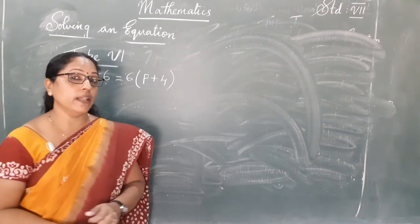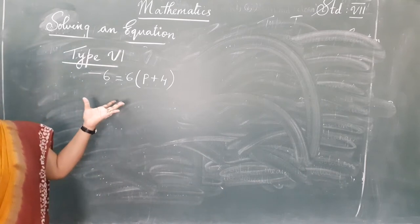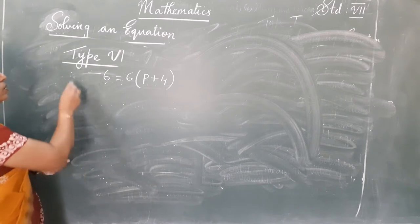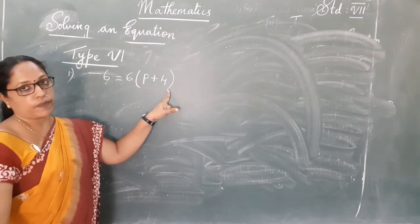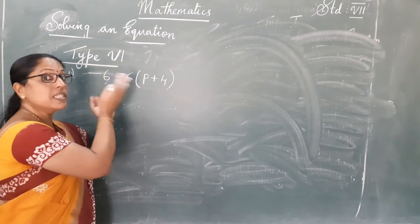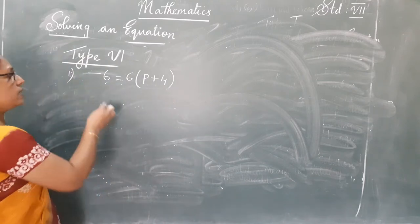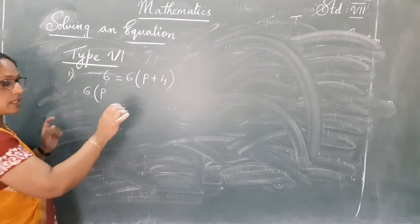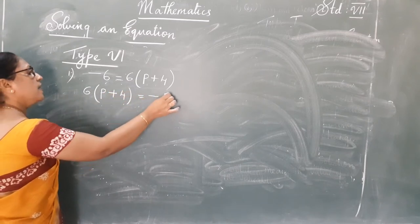Okay children, now we move on to the last type of equation. It's a different type of equation: negative 6 equal to 6 into P plus 4.